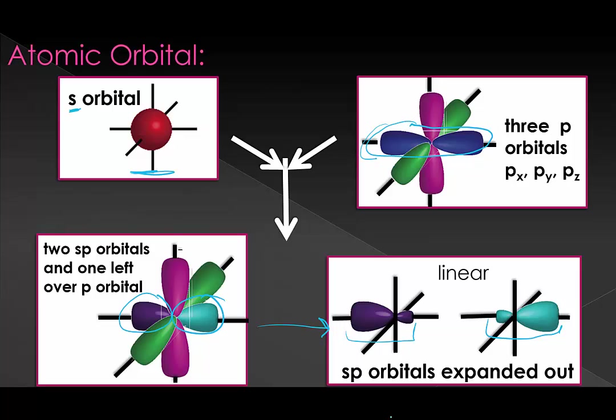Notice how these are arranged. We have two hybrid orbitals that are going to be as far apart from each other as possible. Two hybrid orbitals as far apart as possible is a 180-degree angle, and that's a linear molecule.